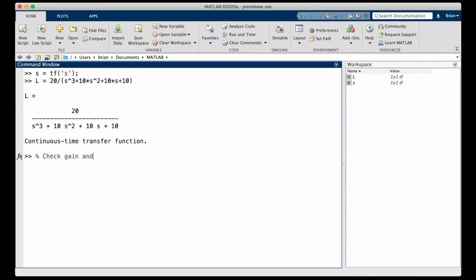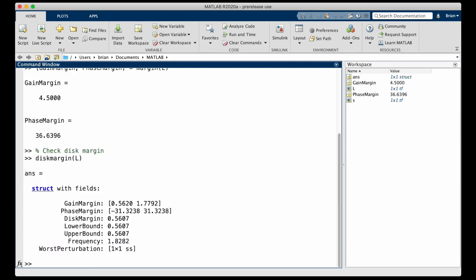For example, given this system L, the classical gain and phase margins are 4.5 and almost 37 degrees. But if I check the disk margins, there's a bunch of numbers here, but they're definitely different, and that's what we're going to talk about. But don't worry, we're not going to get too bogged down in the mathematics, we're going to try to interpret disk margin and these numbers visually. So I hope you stick around for it.